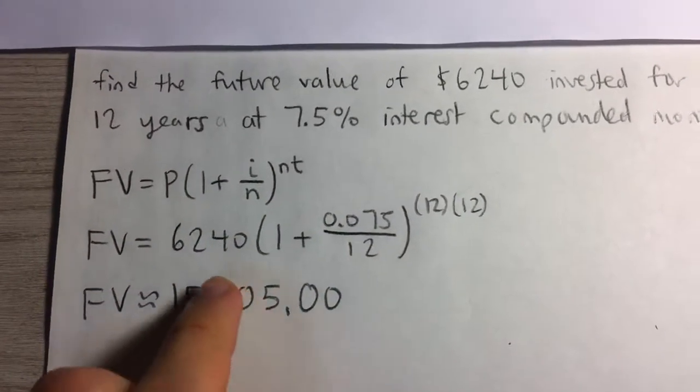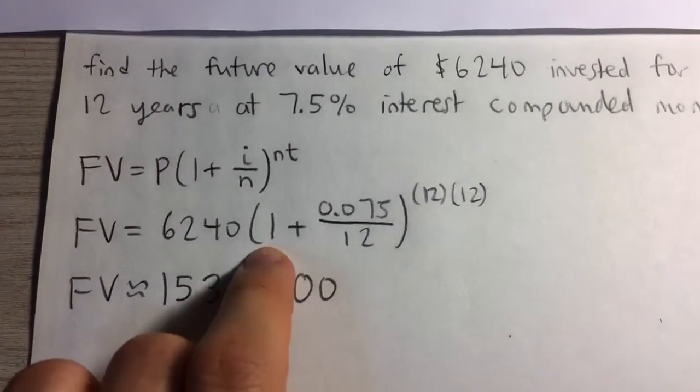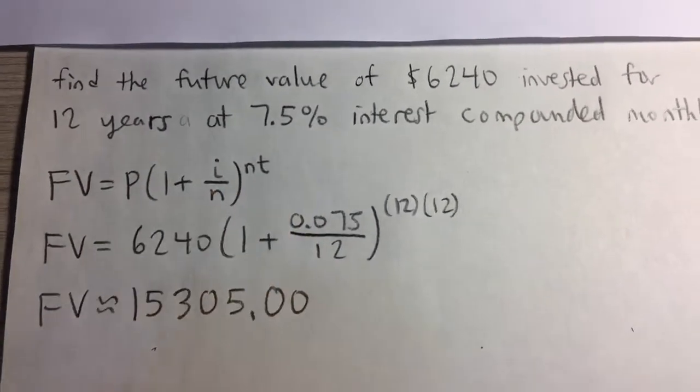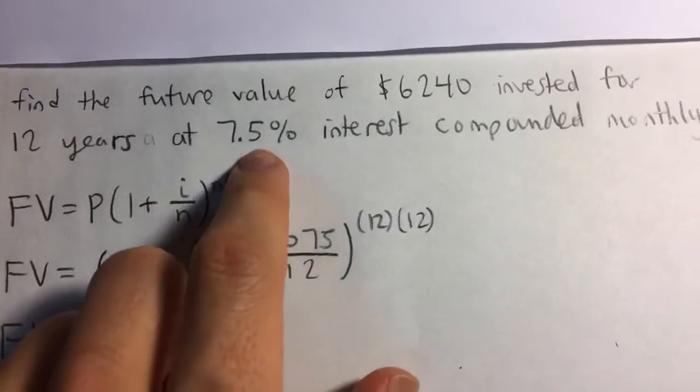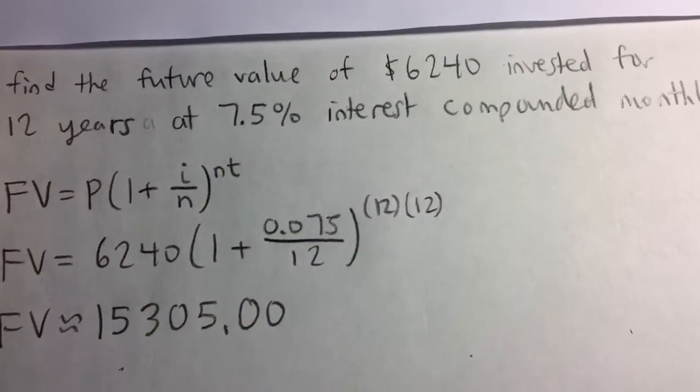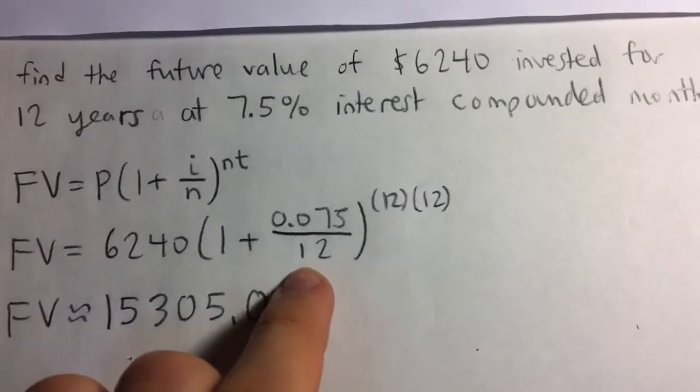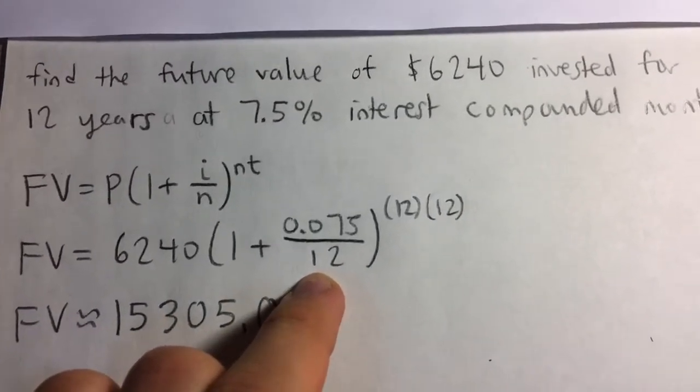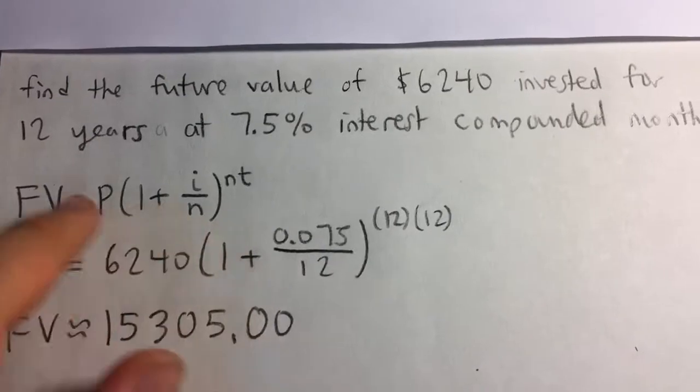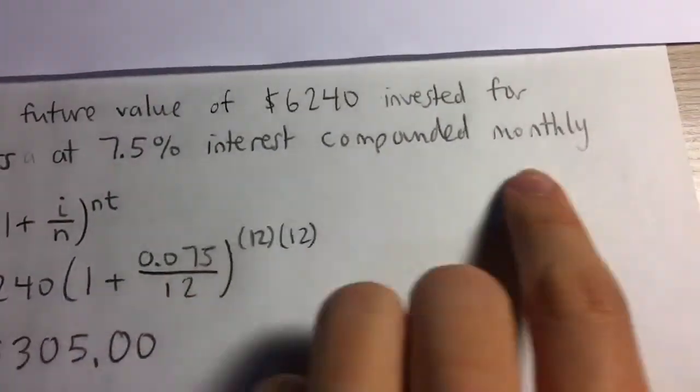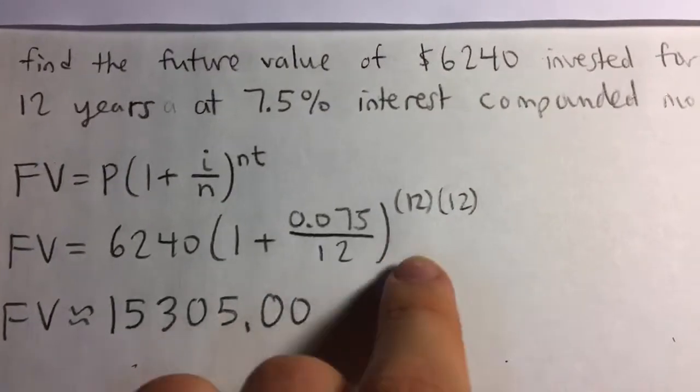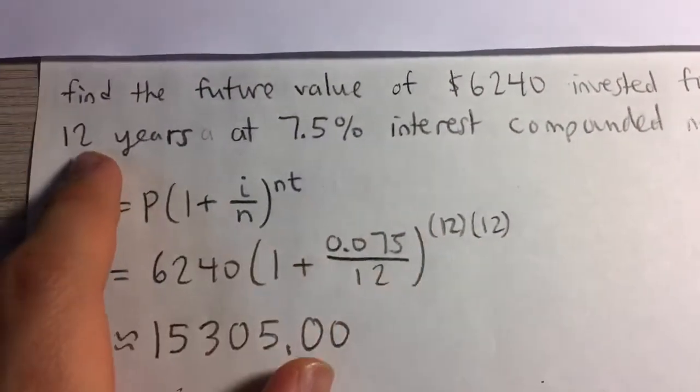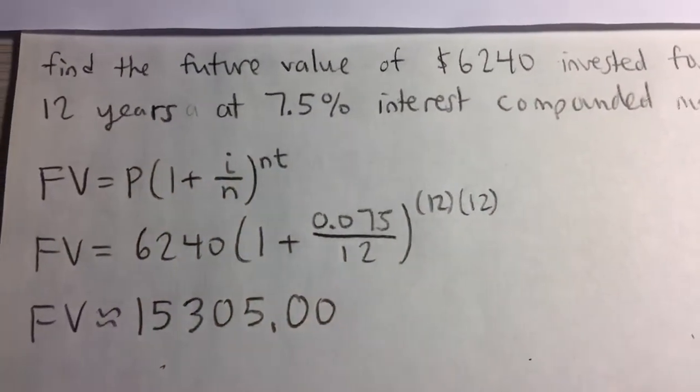So our principal is $6,240. We have times 1 plus the interest rate, which is the annual interest rate, which is 7.5%. We have to convert that to a decimal, so it becomes 0.075. n is 12 because it's compounded monthly, so we have 12 compounding periods per year, and it's raised to the 12 times 12 power, because we invested for 12 years.